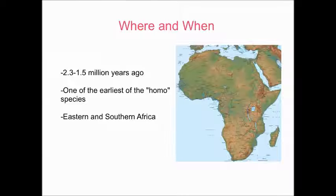The Homo habilis originated around 2.3 million years ago and lived up until about 1.5 million years ago, making it one of the earliest of the Homo species. It originated in the dry grasslands of eastern and southern Africa.